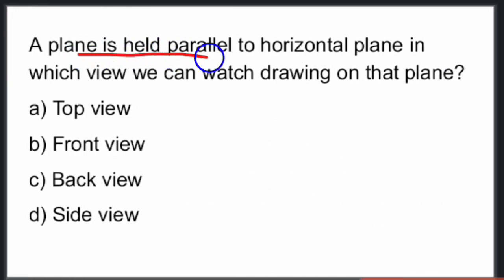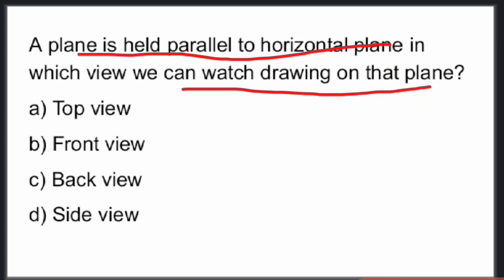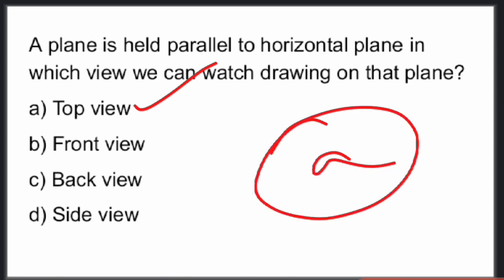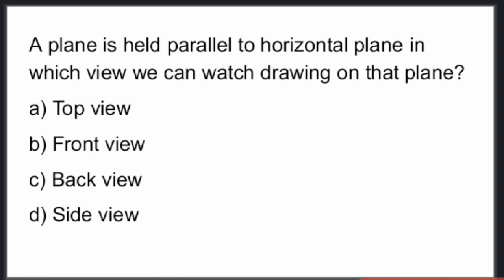Next: a plane is held parallel to the horizontal plane — in which view can we see the true shape drawn on that plane? The horizontal plane and vertical plane are perpendicular to each other. When a plane is parallel to the horizontal plane, we can see its true shape in the top view. Option A, top view.